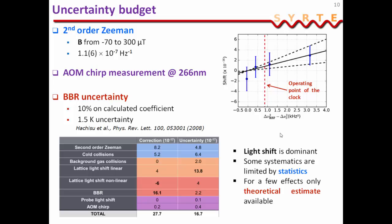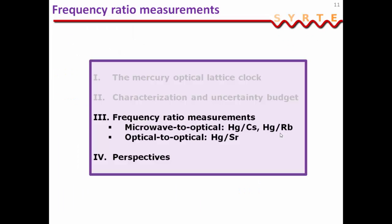I should say that some systematics in this uncertainty budget are limited only by statistics, so we could improve upon them just by taking more data. So, now that we've characterized our clock, and we are at the limit, basically, of what the SI system of units can do, we want to compare it with microwave standards as well as optical standards that we have at SYRTE.